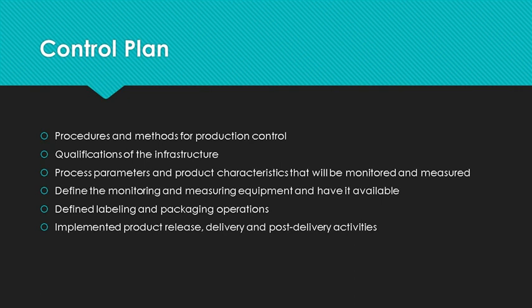I have been in companies where the measuring device was out for calibration and product was running without an alternative method to measure. Labeling is critical to traceability, so the control plan describes the labeling and packaging requirements. The control plan defines the release of product and includes delivery activities. If there are post-delivery activities, they are defined in the control plan as well.